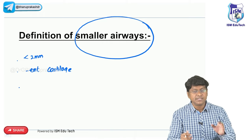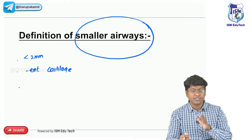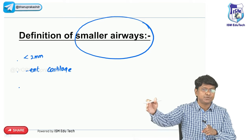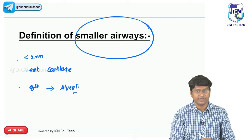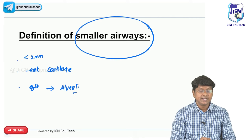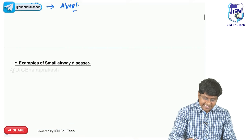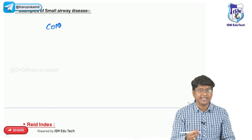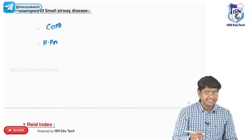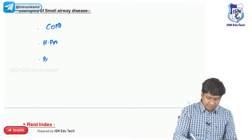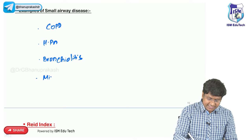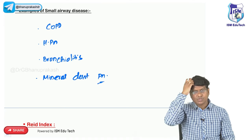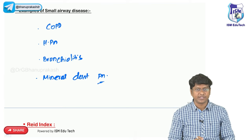We have 23 generations of airways total. From the 8th generation onwards distally up to the alveoli are the smaller airways. Examples of smaller airway diseases include COPD, hypersensitivity pneumonitis, bronchiolitis, and mineral dust pneumoconiosis. An important point in COPD is chronic bronchitis, defined as cough with mucoid expectoration for 3 months consecutively for 2 years.